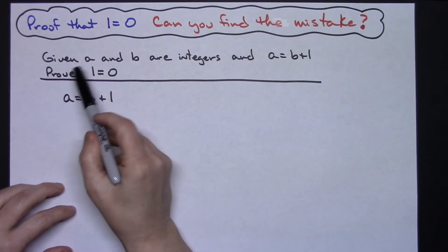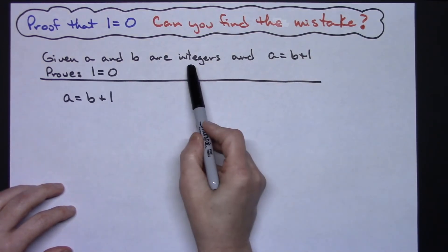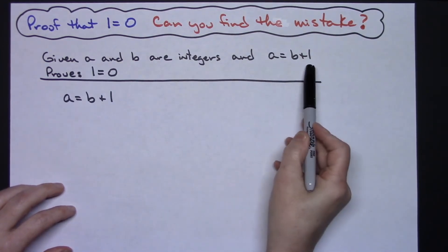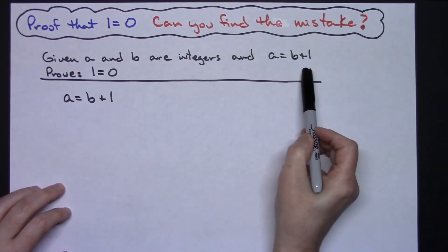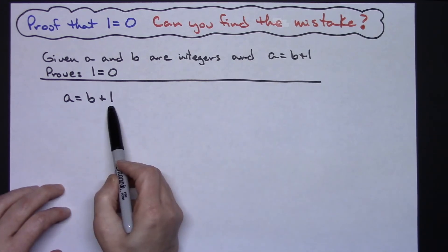In this particular one we are going to be given that a and b are integers and that a equals b plus 1, and our goal here is to prove that 1 equals 0. So this given right here of a equals b plus 1, that's what I'm going to start with.